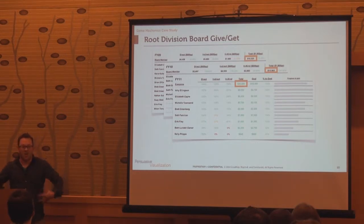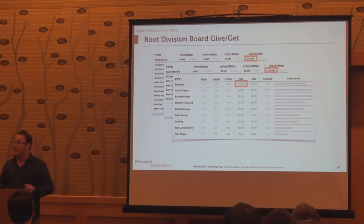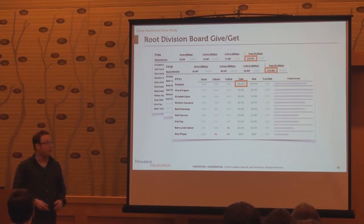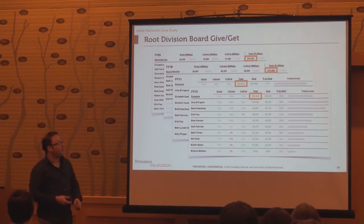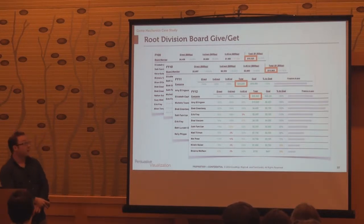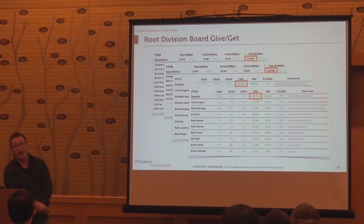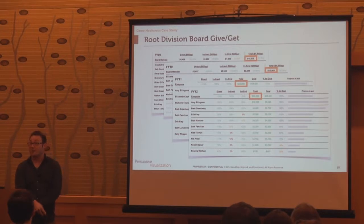It grew again, and by the fourth year we were up to $30,000 in direct and in-kind giving across basically the same roster count as we started with. $10,000 to $30,000 — all because of gamification.